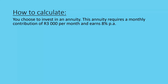This is a simple example. You choose to invest in an annuity. This annuity requires a monthly contribution of 3,000 Rand per month and earns 8% per annum. It's very important to take note that this is going to be compounding monthly, so we are going to need to use our compound interest knowledge here to work with this.